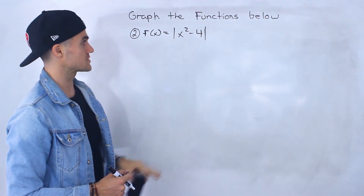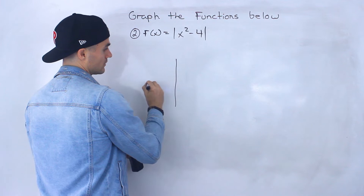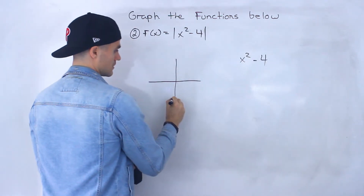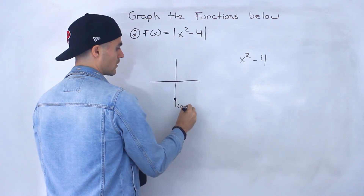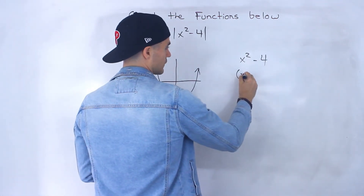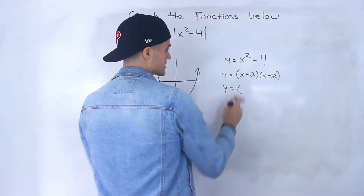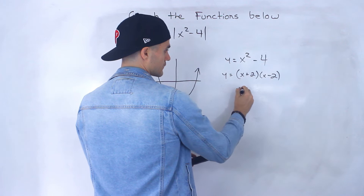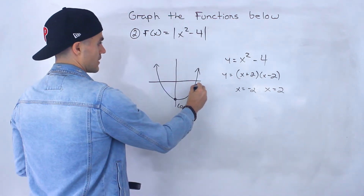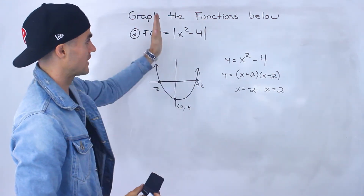For the second function, f(x) equals the absolute value of x squared minus 4. Using the first method, we graph x squared minus 4 — that's the parent parabola shifted down by 4 units, so the vertex is at (0, negative 4). Factoring as a difference of squares gives x-intercepts at x equals negative 2 and x equals positive 2.